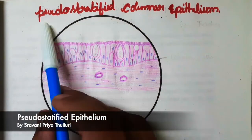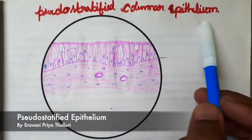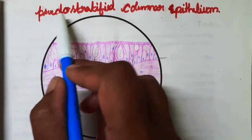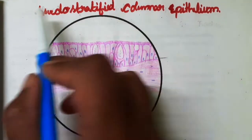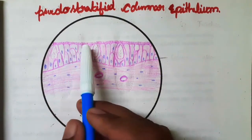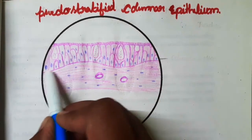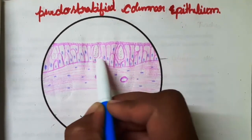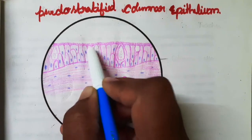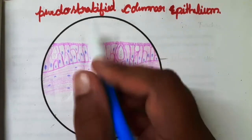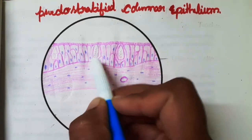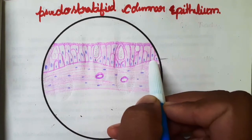Today we will learn about pseudostratified columnar epithelium. 'Pseudo' means it gives a false appearance of multiple layers, so it is called pseudostratified columnar epithelium. It has two types: ciliated and non-ciliated. It has a single layer of columnar cells arranged on the basement membrane at different heights, with nuclei at different positions in each cell, but not all cells reach the surface.